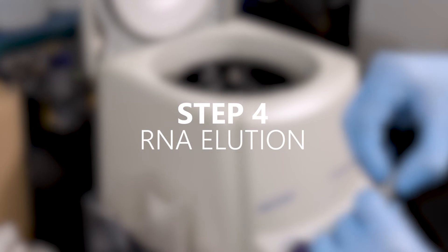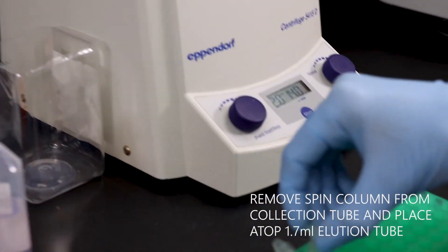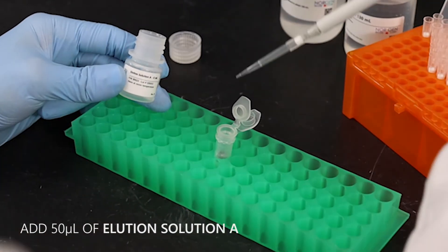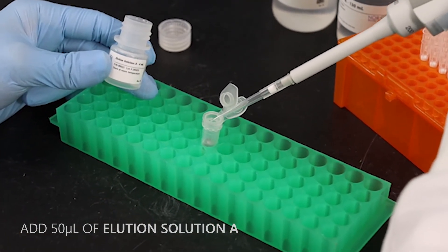Step 4. RNA Elution. Remove the spin column from the collection tube and place it atop a 1.7 ml Elution tube. Add 50 microliters of Elution Solution A.